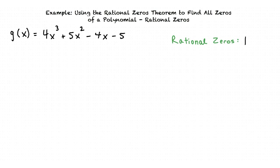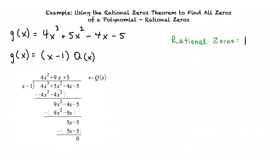To find the rest of our rational zeros, we use the following equation: g of x equals the quantity x minus 1 times q of x. To find q of x, we divide g of x by x minus 1. Using synthetic division, we find that q of x equals 4x squared plus 9x plus 5.